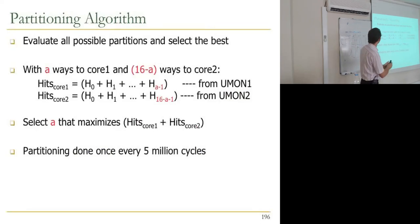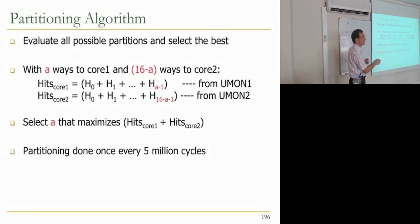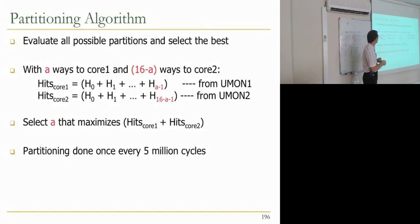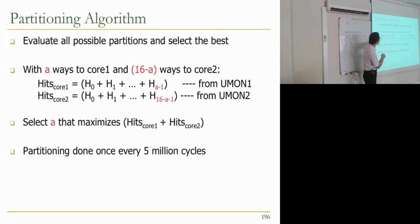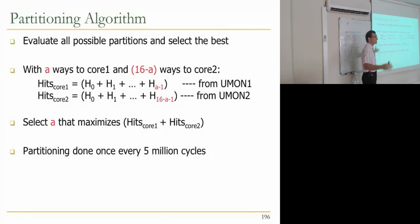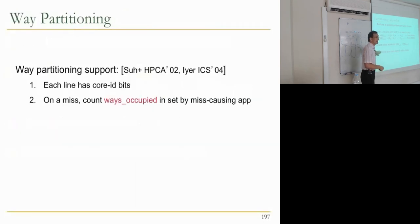Once you have the miss-rate curves, how do you decide on a partitioning algorithm? If you allocate A ways to core 1, you allocate 16 minus A ways to core 2. Hits to core 1 are the sum from 0 ways up to A-1, and hits to core 2 are the sum up to 16-A-1. We select an A that maximizes total hits, and partitioning is done every 5 million cycles.